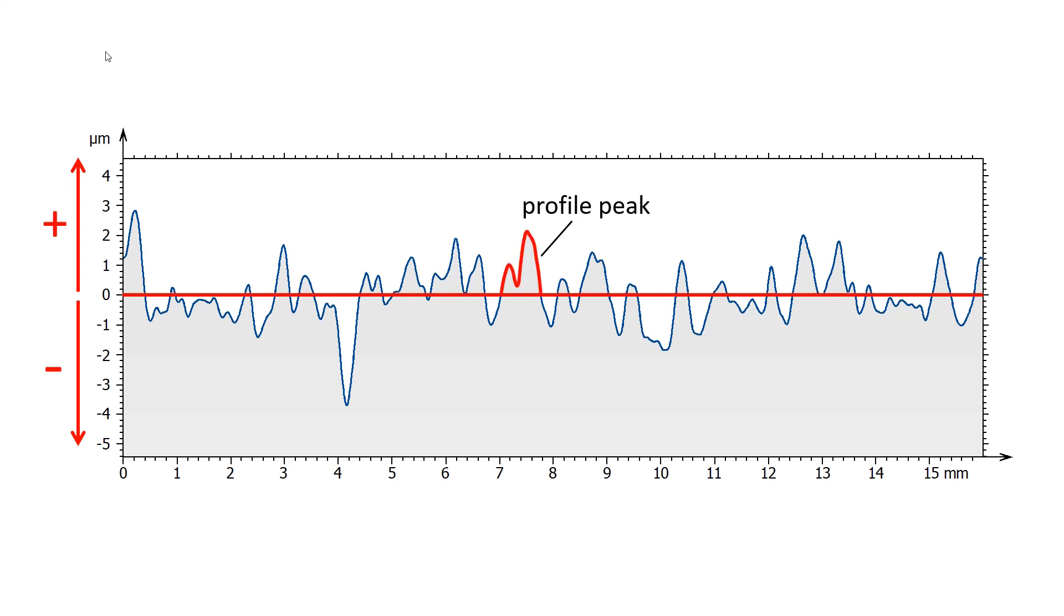A portion of the profile above the mean line, between two zero crossings, is called a profile peak. A portion below the mean line, between two zero crossings, is called a profile valley.